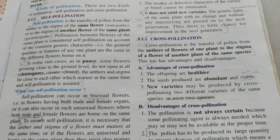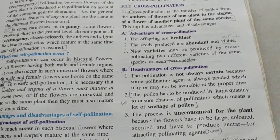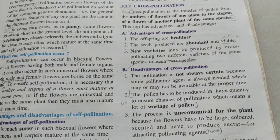Cross-pollination also has some disadvantages. First of all, it is not always certain because it depends on agents like insects or wind, which may not always be available. Cross-pollinating flowers have to produce abundant pollen grains, hoping that some will land on the stigma of a flower of another plant of the same species.